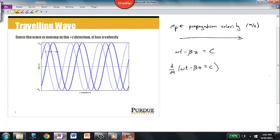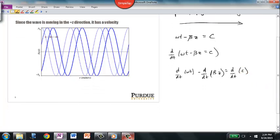And so that is d dt of omega t minus d dt of beta z is equal to d dt of some constant. And so the derivative with respect to time of omega t is just omega. And the derivative of beta times z with respect to time is going to be beta dz dt. There was a minus sign there. And then the derivative of constant with respect to anything is just zero.